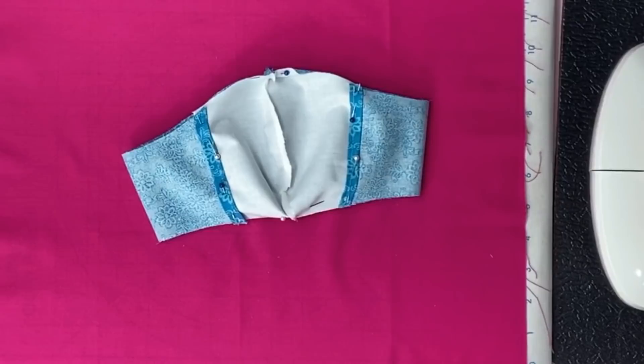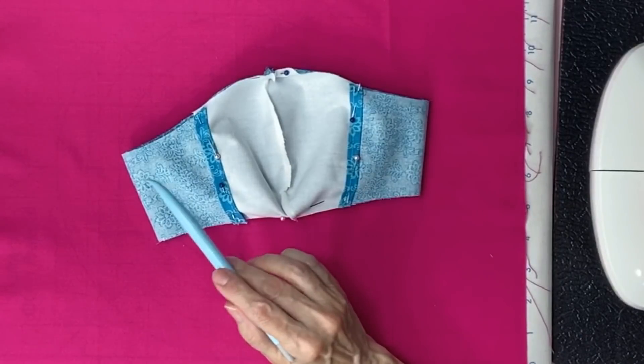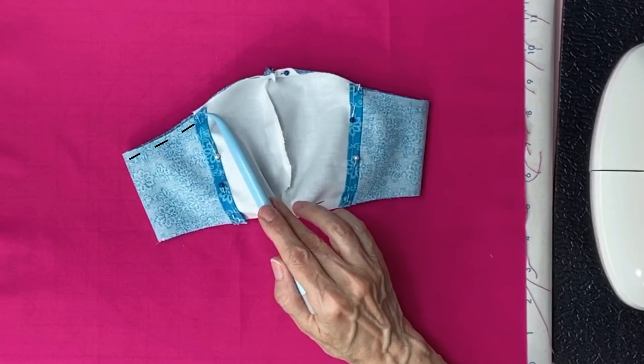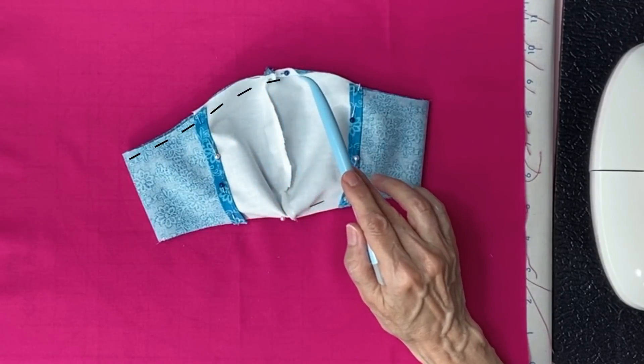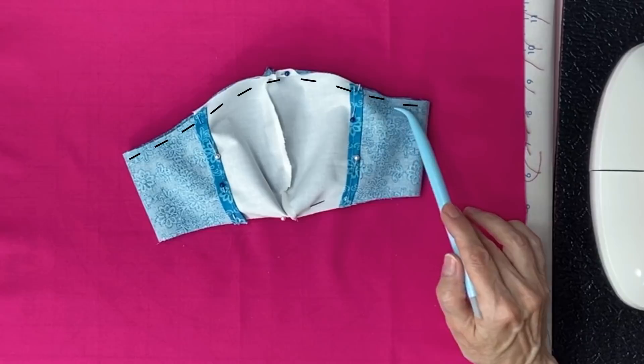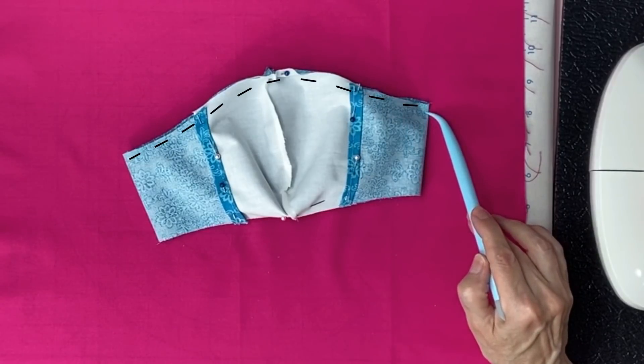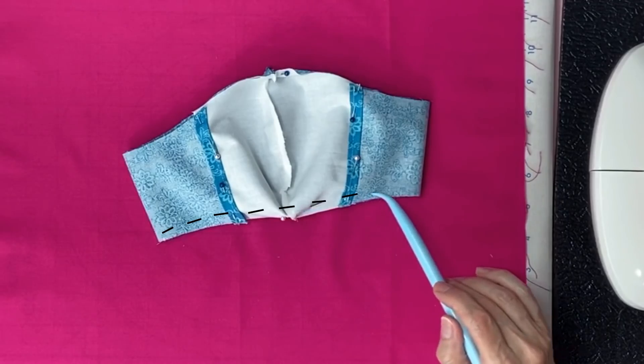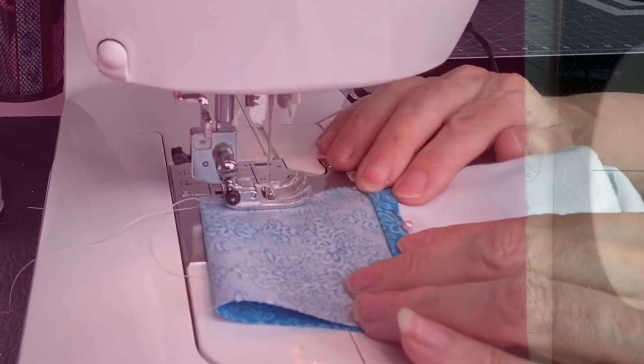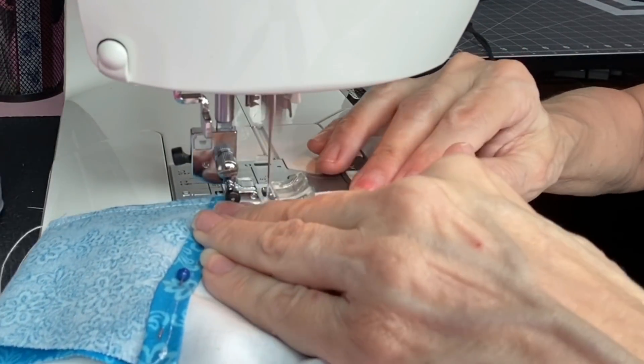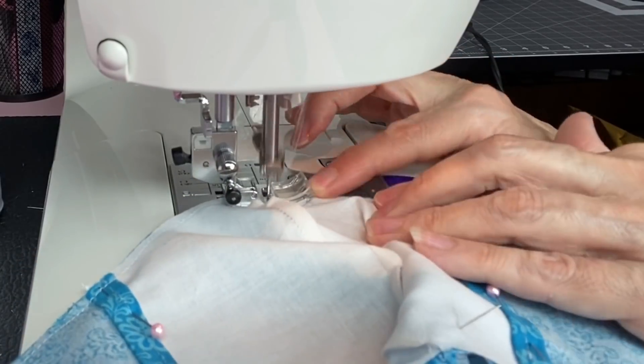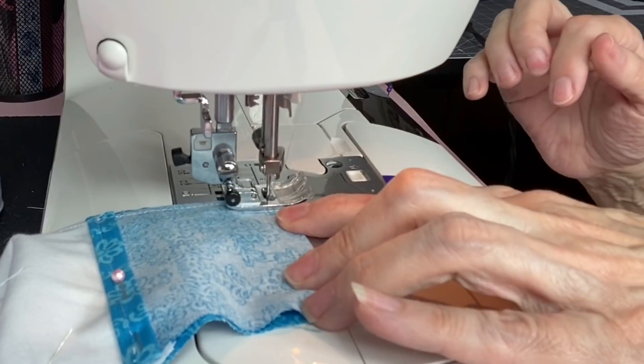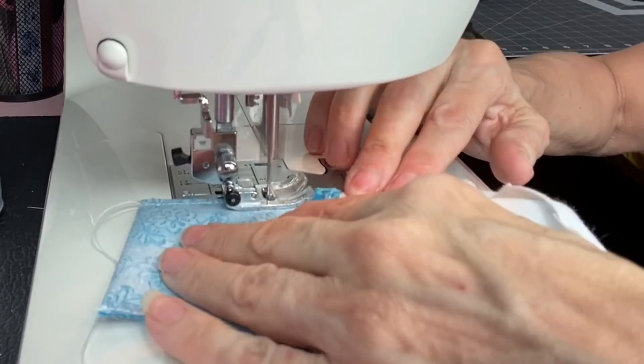Take it to the sewing machine and sew a quarter inch from the edge. Start here. Go up around the curve. And stop when you get to the end. Then sew straight across. I'll sew the top first. And I'm sorry, my hands sometimes get in the way. It's kind of hard to avoid it. Now I'll do the bottom.